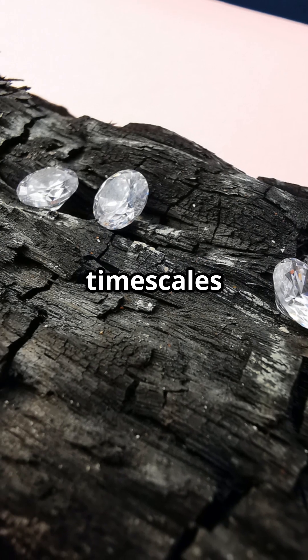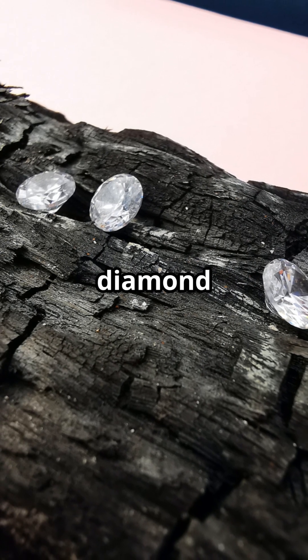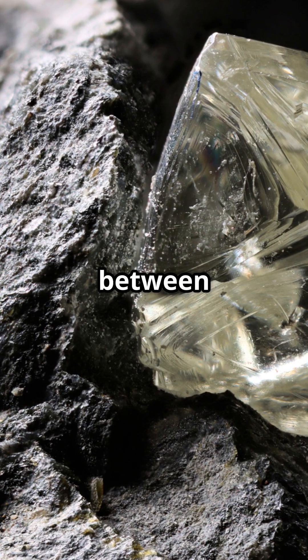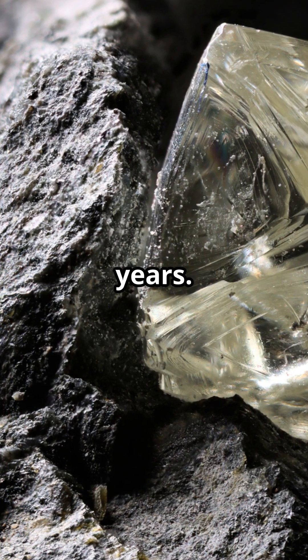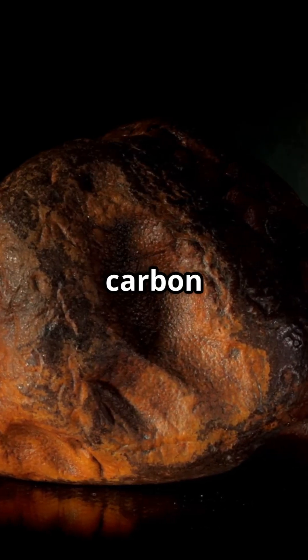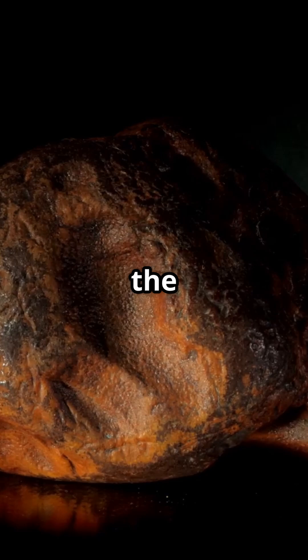Geological timescales: The formation of a diamond takes extremely long periods of time, typically between 1 and 3.3 billion years. This slow process allows carbon to crystallize steadily, producing the diamonds we know today.